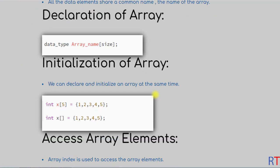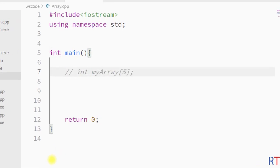Now we're going to see how we can initialize an array. We can declare and initialize an array at the same time. For example, here we have one integer array x and we are declaring and initializing the array with a bunch of numbers. We can specify the size of the array while initializing it, and also if we do not specify the size, the compiler will automatically calculate the size. To declare and initialize, first we have the data type, then the name, and then inside the square bracket the size.